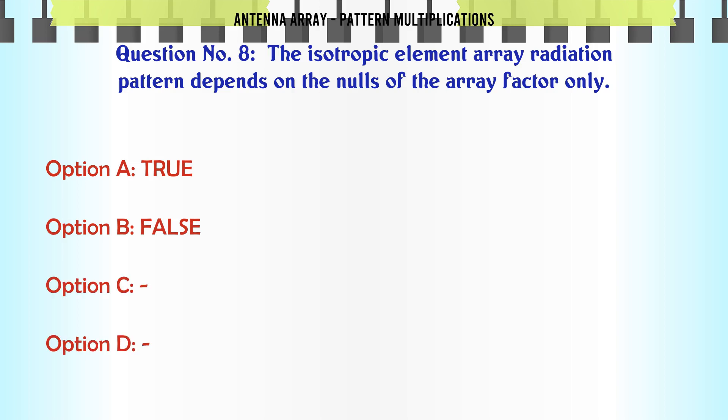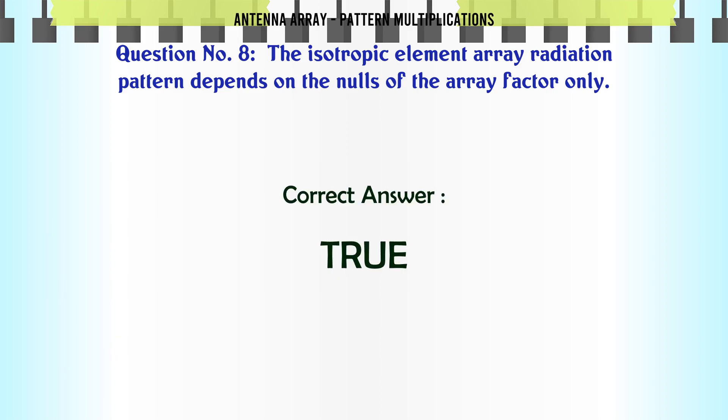The isotropic element array radiation pattern depends on the nulls of the array factor only. A. True, B. False, C. (no option), D. (no option). The correct answer is True.